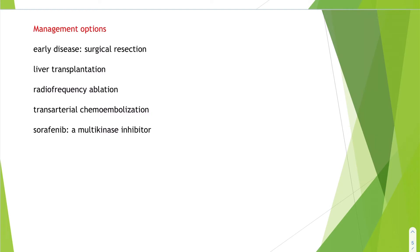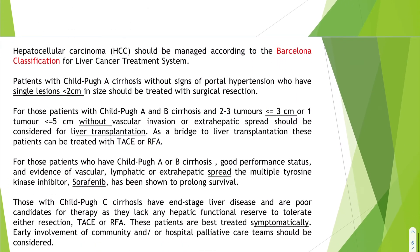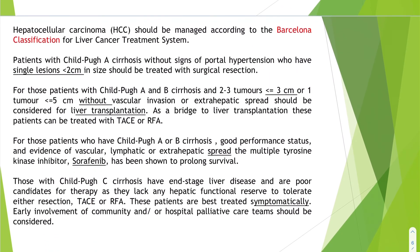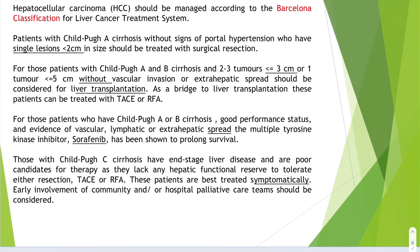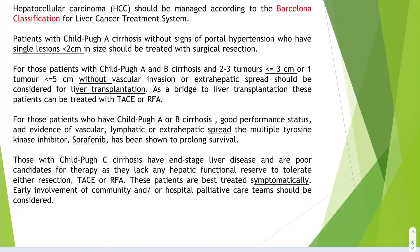If early disease is found, management options include surgical resection, liver transplant, radiofrequency ablation, trans-arterial chemoembolization, and sorafenib — a multi-kinase inhibitor. Hepatocellular carcinoma should be managed according to the Barcelona classification for liver cancer treatment system.